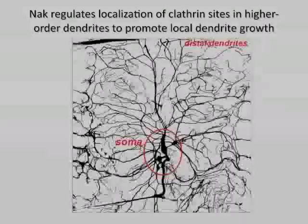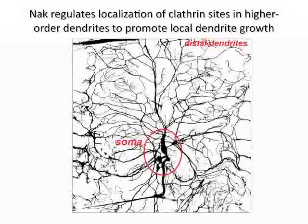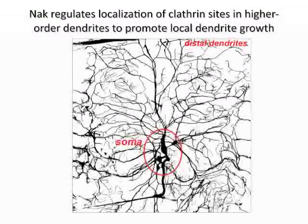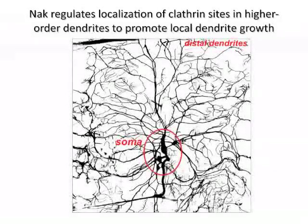We are interested in how neurons undergo dendrite morphogenesis during development. In particular, we are interested in how distal dendrites that are far away from the soma undergo extension and retraction. We use Drosophila dendritic arborization neurons as the model system. While some dendrites are actively undergoing extension, some are undergoing retraction. This suggests that individual dendrites autonomously control their own behavior.